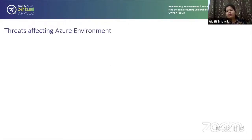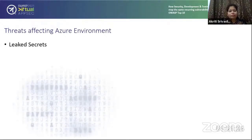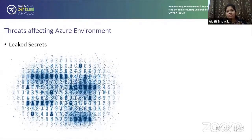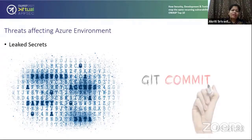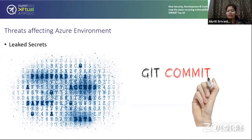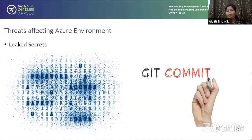What are the threats which affect the Azure environment? Let me take one example: leaked secrets. They have been pretty popular. The most common is the infamous secret in HTML source code and Git commits — developers push to Git and sometimes include secrets in the commit. If the code is public, it's a very bad mess to clean up.